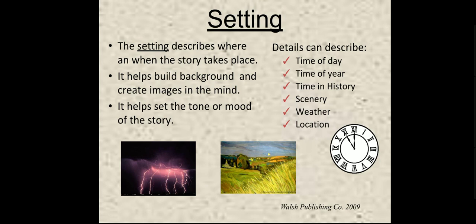Setting can create an image — we can picture something in our mind with the help of setting. Sometimes it can also help us set the tone, which means the emotion or mood of the story. Suppose it was all dark and there were no lights, but far away there was one street light flickering on and off. Those images set a tone — and I'm sure it was not a happy emotion. It was kind of scary, like something bad is going to happen.